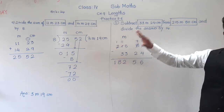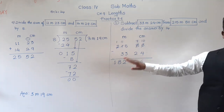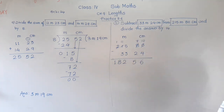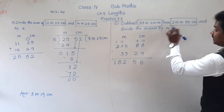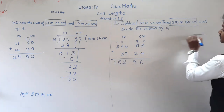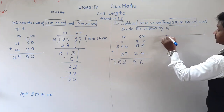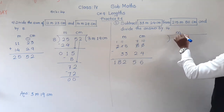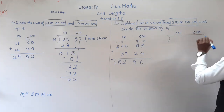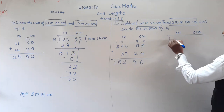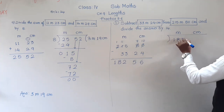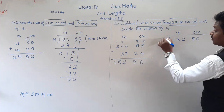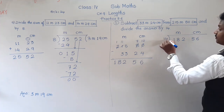So the answer from the subtraction is 182 meter 56 centimeter. Now this difference which we obtained in the subtraction, we have to divide by 14. So we write: 182 meter 56 centimeter divided by 14.